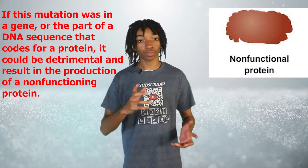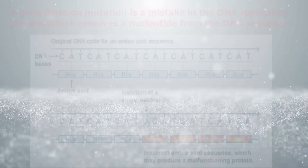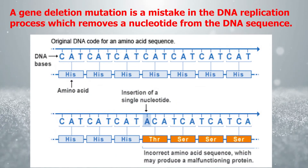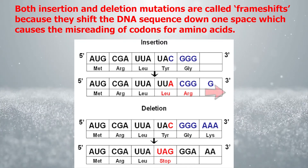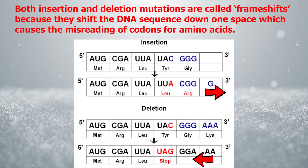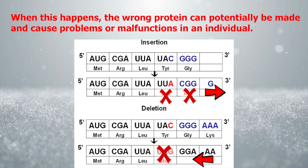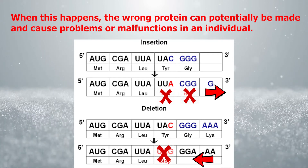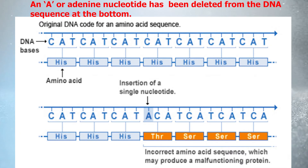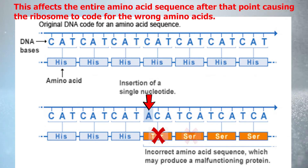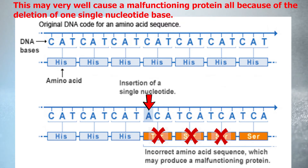Now let's round it out with deletion mutations. A gene deletion mutation is a mistake in the DNA replication process which removes a nucleotide from the DNA sequence. A deletion mutation is also called a frameshift mutation, just like insertion mutations, because both types shift the DNA sequence down one space, causing the misreading of codons for amino acids. When this happens, the wrong protein can potentially be made and cause problems or malfunctions in an individual. Notice that in the original DNA sequence at the top, all the codons code for the amino acid histidine. But in the DNA sequence at the bottom, an A or adenine nucleotide has been deleted. This affects the entire amino acid sequence after that point, causing the ribosomes to code for the wrong amino acids and potentially causing a malfunctioning protein — all because of the deletion of one single nucleotide base.